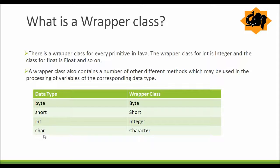The only difference is with char — the primitive data type is char but the wrapper class is Character with a capital C. So there is a wrapper class for every primitive in Java. Now, why do we need wrapper classes?